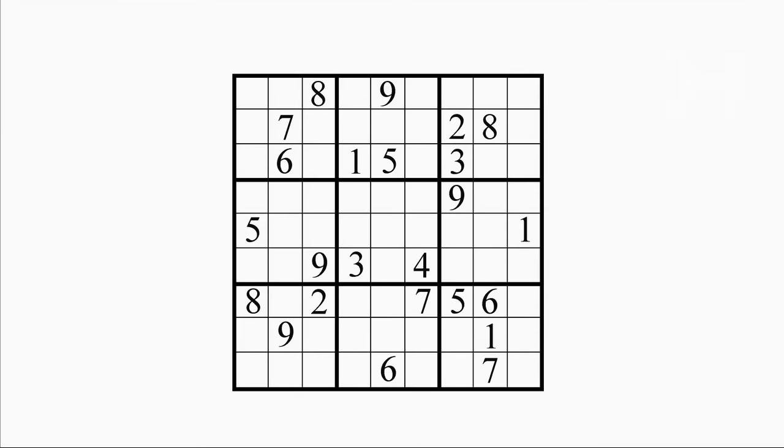For example, if the top middle box contains no number 8, and the other boxes along the top row of the Sudoku board contain 8's in the first and second rows, process of elimination dictates the 8 in the upper middle box must be in the third row.